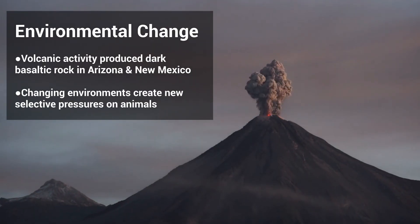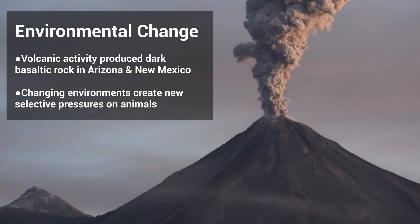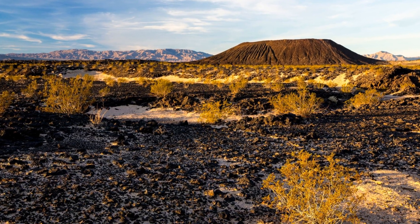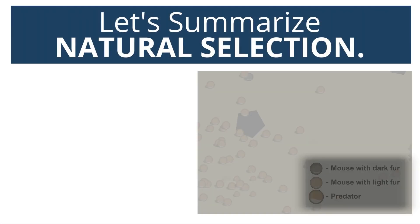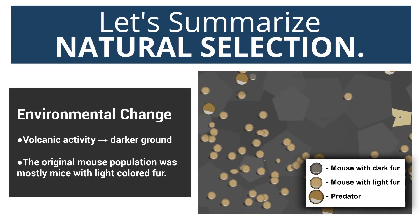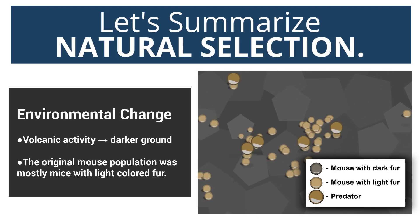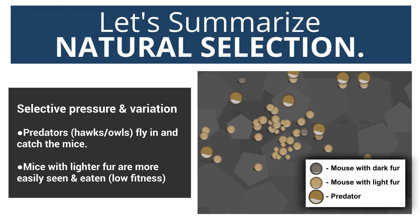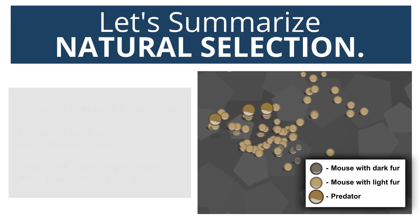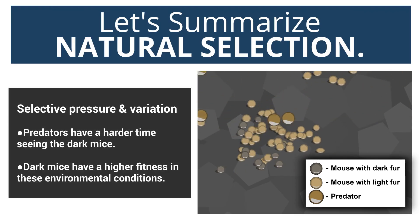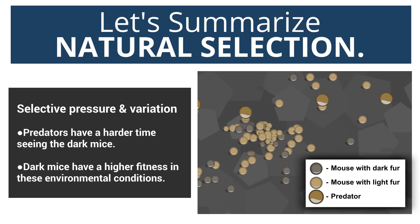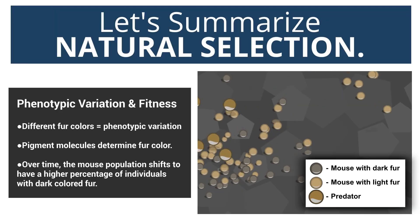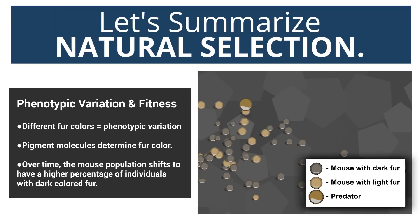But environments can change. Rock pocket mouse evolution has been greatly influenced by geologic activity. In some areas of the desert, the landscape is drastically different because of the presence of dark volcanic rock that in some areas formed just over a thousand years ago. Once the landscape changed to include darker surfaces, the selective pressures on the mouse population changed as well. In these environments, mice with light-colored fur would have been easily spotted by predators, while mice with darker colored fur would have had an increased fitness due to their ability to camouflage in the new conditions. This led to higher rates of survival and reproduction of mice that had darker fur colors.